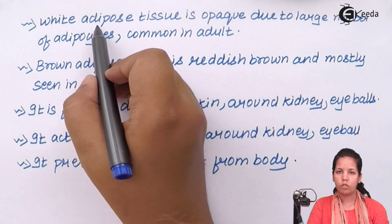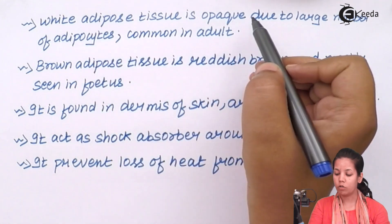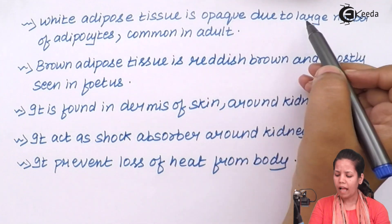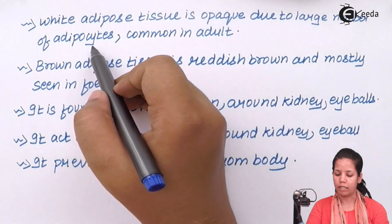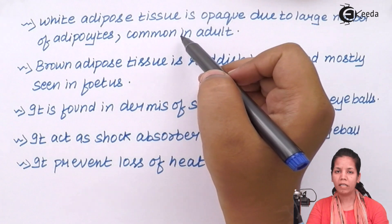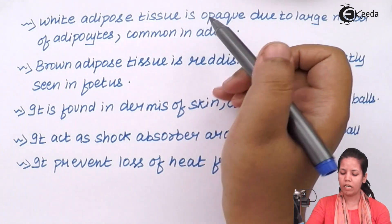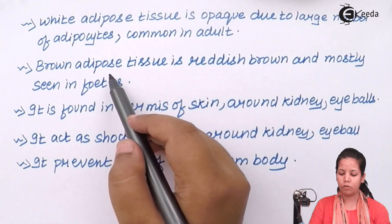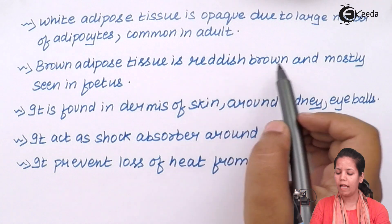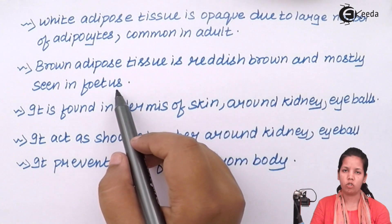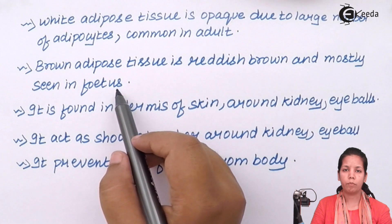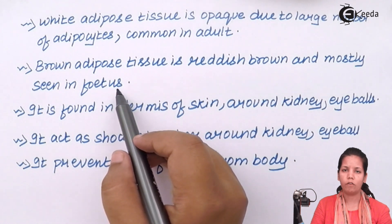White adipose tissue is opaque due to a large number of fat cells or adipocytes, and it is common in adult beings. Whereas brown adipose tissue is reddish brown in color and it is mostly seen in a fetus or a newborn child. So we all were born with brown adipose tissue and eventually, while growing up, we developed this white kind of tissue.